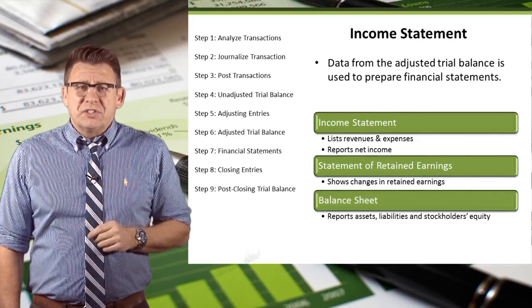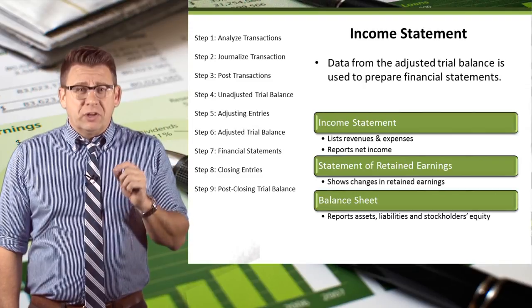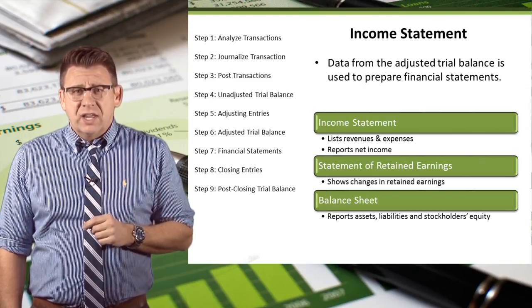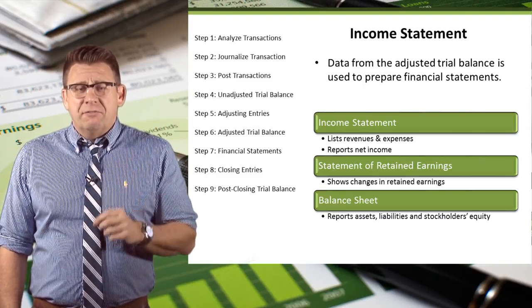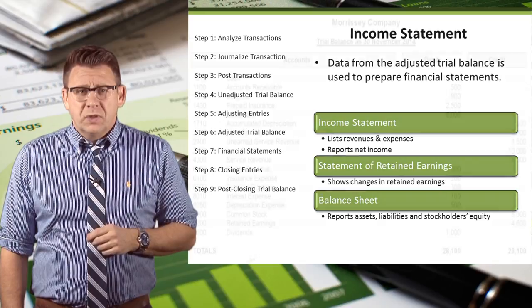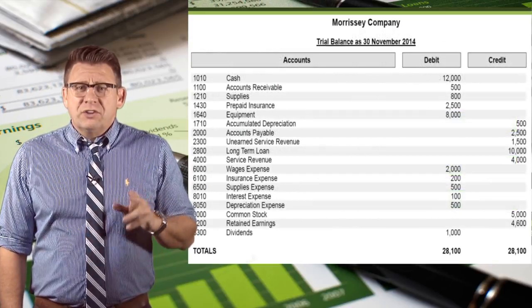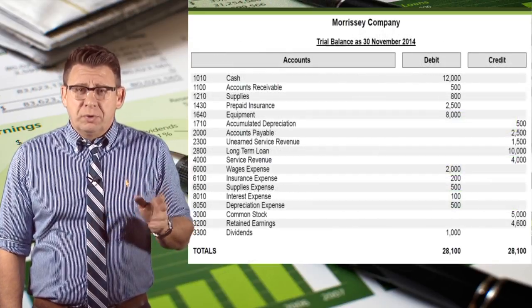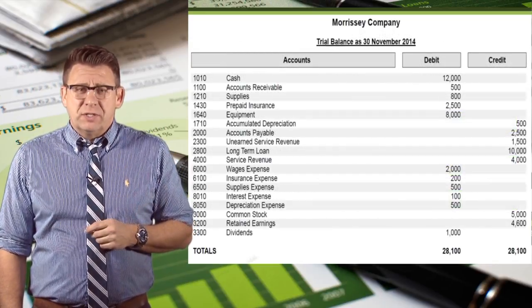An income statement includes a company's revenues and expense accounts, and the net of those two is net income. So let's use the adjusted trial balance to complete the financial statements.